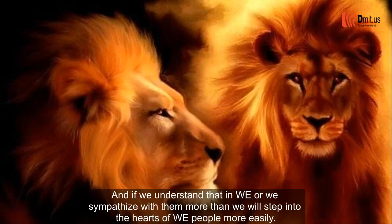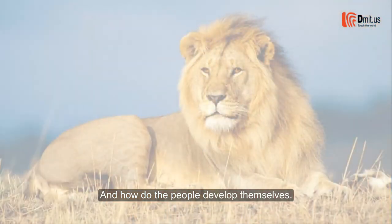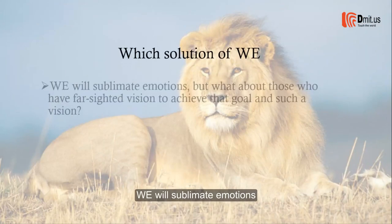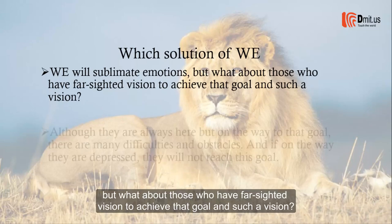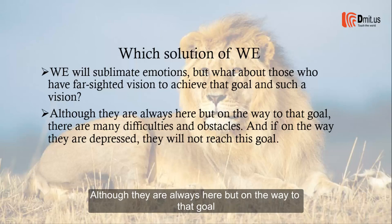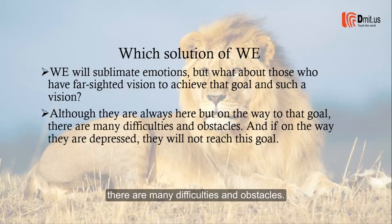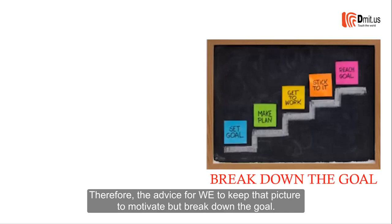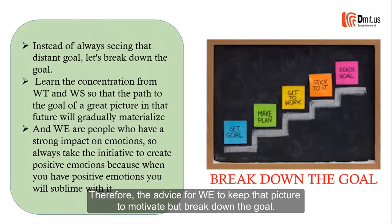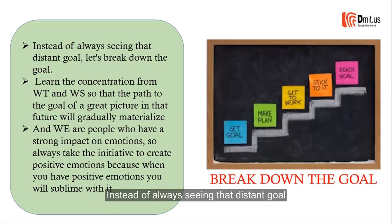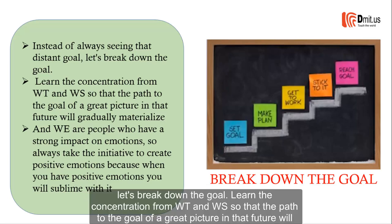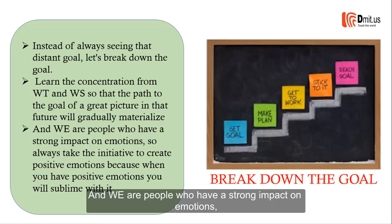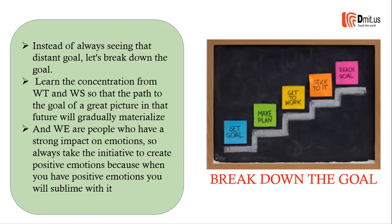If we understand and sympathize with WE people, we will step into their hearts more easily. For WE people to develop themselves, they should sublimate their emotions. Although they have a farsighted vision and a long-term goal, on the way to that goal there are many difficulties and obstacles. If they become depressed along the way, they will not reach their goal. The advice for WE is to keep that big picture for motivation, but break down the goal into smaller steps.